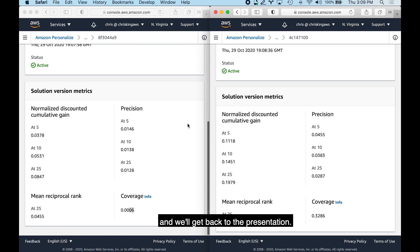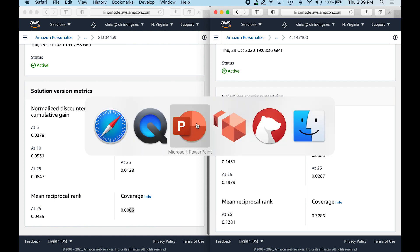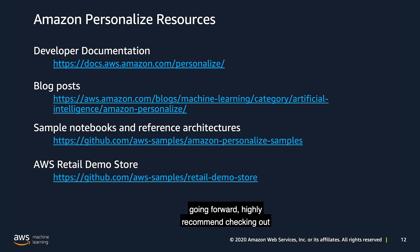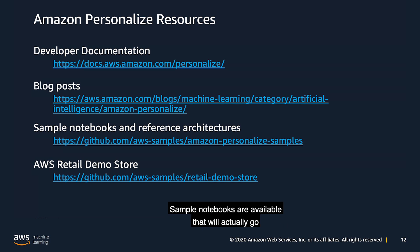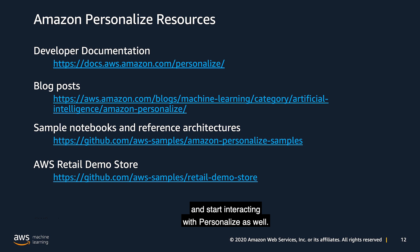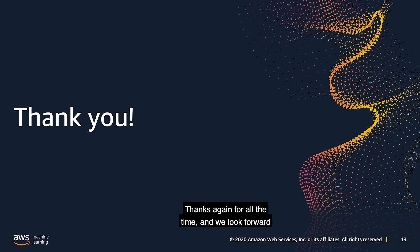That wraps up our demo and we'll get back to the presentation. For additional resources, highly recommend checking out the developer documentation, blog posts, and sample notebooks that go through this and other reference architectures. There's also a nice demo called the AWS Retail Store — you can follow the link in the presentation to deploy it in your own account and start interacting with Personalize. Thanks for your time, and we look forward to seeing you in our next video.